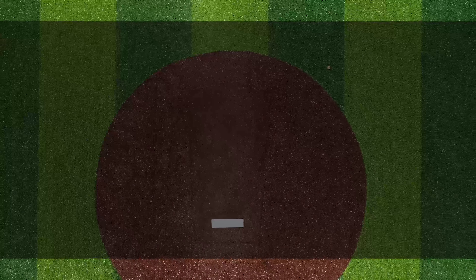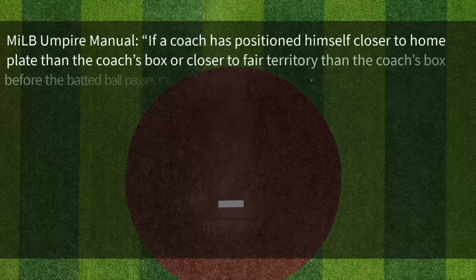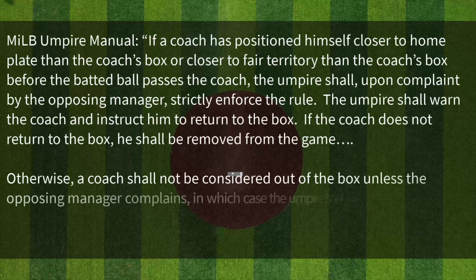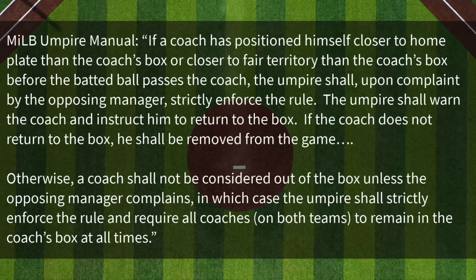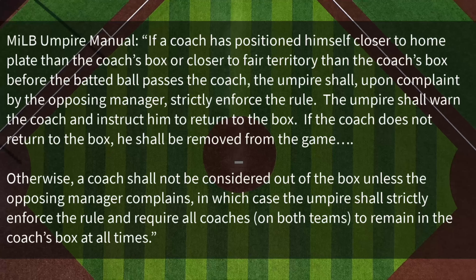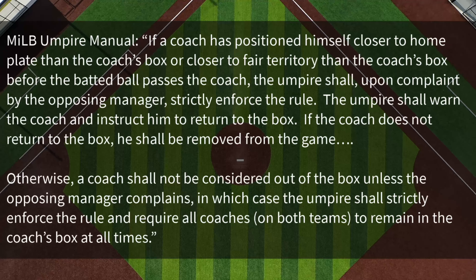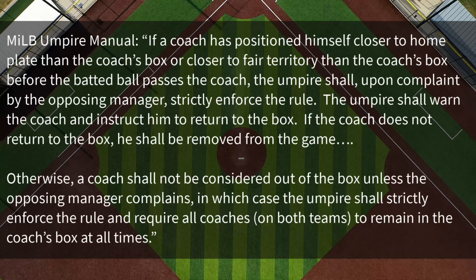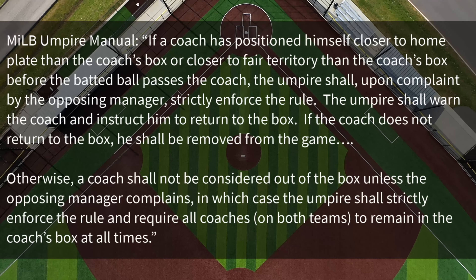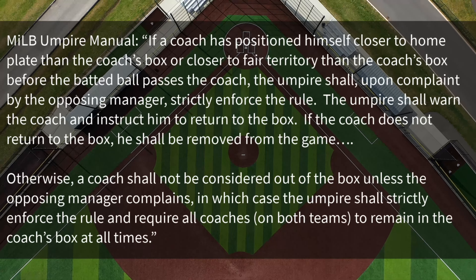Now, what do we do if a base coach is not standing in the box? The NFHS instructions don't cover enforcement procedures, so let's use the philosophy given in professional baseball. If a coach is positioning himself closer to home plate than the coach's box or closer to fair territory than the coach's box before the batted ball passes the coach, the umpire shall, upon complaint by the opposing manager, strictly enforce the rule. The umpire shall warn the coach and instruct him to return to the box. If the coach does not return to the box, he shall be removed from the game. Otherwise, a coach shall not be considered out of the box unless an opposing manager complains, in which case the umpire shall strictly enforce the rule and require all coaches on both teams to remain in the coach's box at all times.